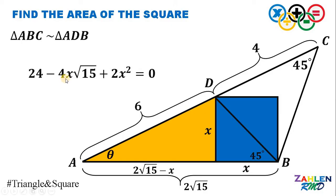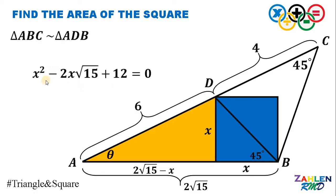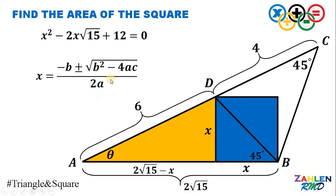Since all coefficients are even, let's divide all terms by 2. This gives us 12 − 2x√15 + x². Rearranging, we have the quadratic equation: x² − 2x√15 + 12 = 0. Our goal is to find the value of x, so we will use the quadratic formula.